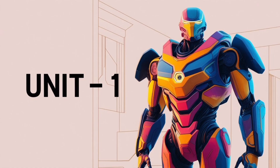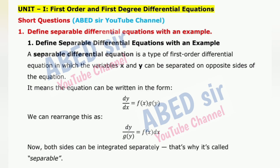Unit 1, first important short question: Define separable differential equations with an example. A separable differential equation is a type of first-order differential equation in which the variables x and y can be separated on opposite sides of the equation. It means the equation can be written in the form dy/dx = f(x)·g(y). We can rearrange this as dy/g(y) = f(x)dx. Now both sides can be integrated separately — that's why it's called separable.